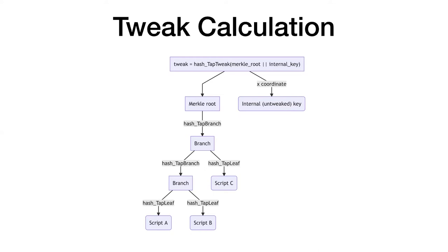You can see that the control block size is always 33 bytes plus n times 32 bytes: the first byte, the internal public key x-coordinate, and then however many sibling hashes you reveal, each always being 32 bytes. And because the hashes are sorted deterministically, you don't need to reveal the position — that's why it's n of 32 bytes, not n of 33 bytes.